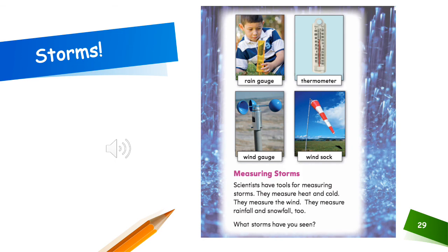Let's read the labels on this page first. Rain gauge, thermometer, wind gauge, wind sock. Measuring storms. Scientists have tools for measuring storms. They measure heat and cold. They measure the wind. They measure rainfall and snowfall, too. What storms have you seen before?